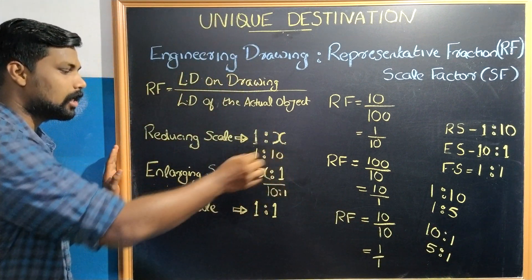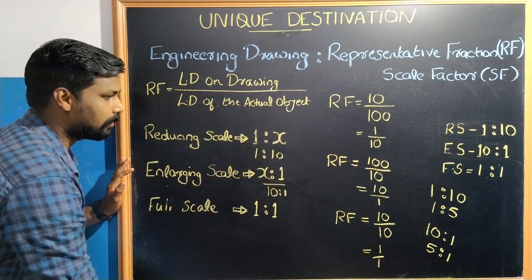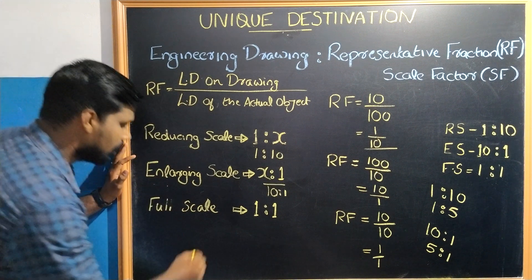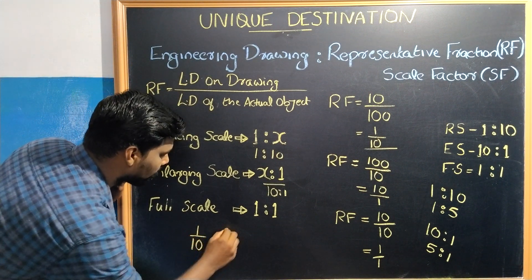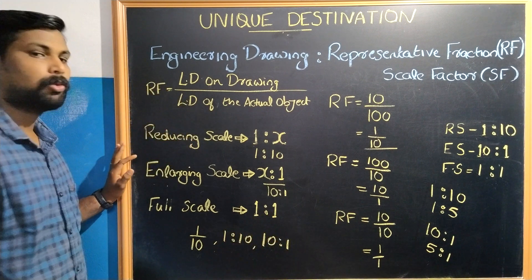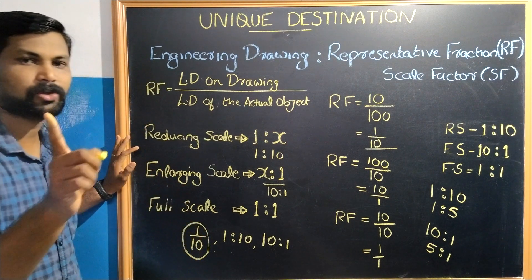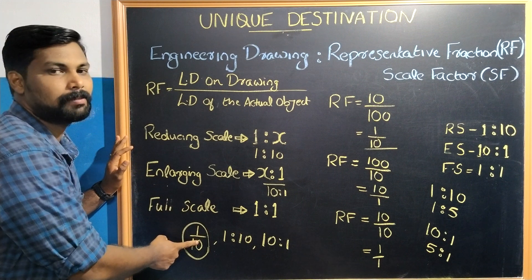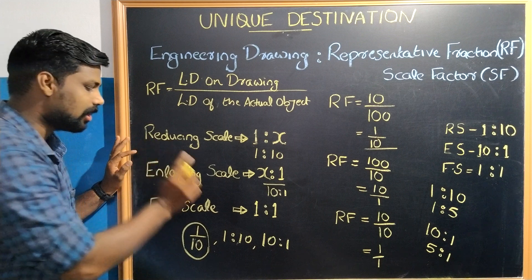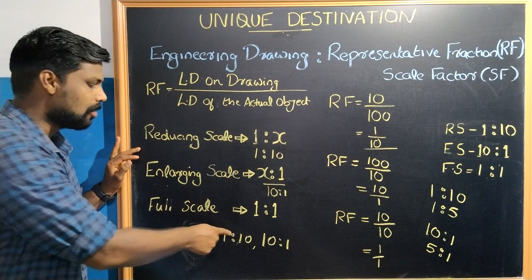Now, we have a representative fraction question. For a reducing scale, the options are 1 by 10, 1 is to 10, or 10 is to 1. The representative fraction is 1 by 10, and the corresponding scale designation is 1 is to 10. So the answer is 1 by 10 for the representative fraction of a reducing scale.